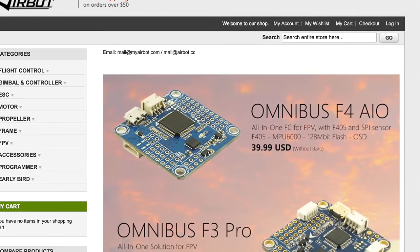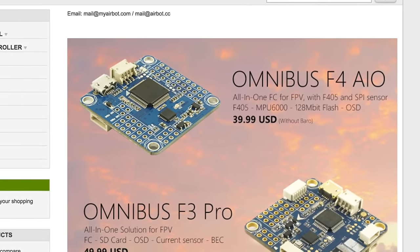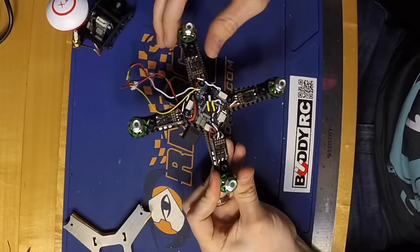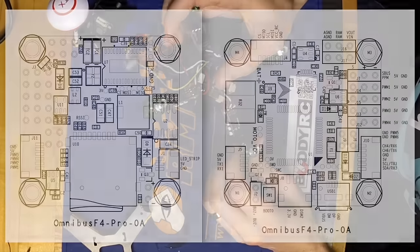I really like the Omnibus all-in-one flight controller because of all the features that come built in. With a build this tight, you really can't afford to have a separate OSD board, a current sensor board, and a memory card reader. There's just not enough room.